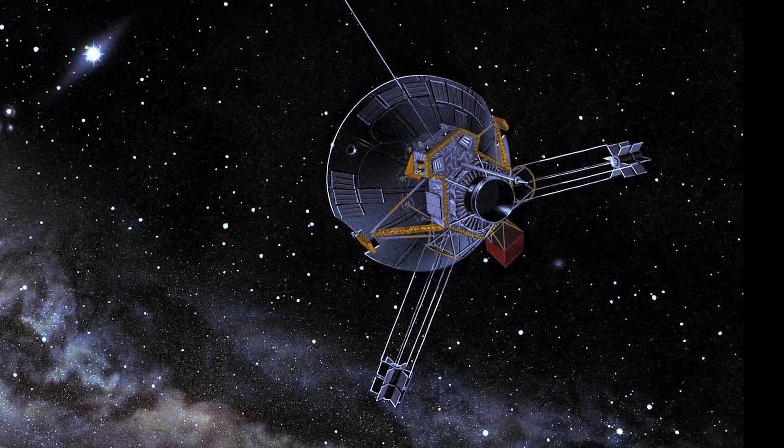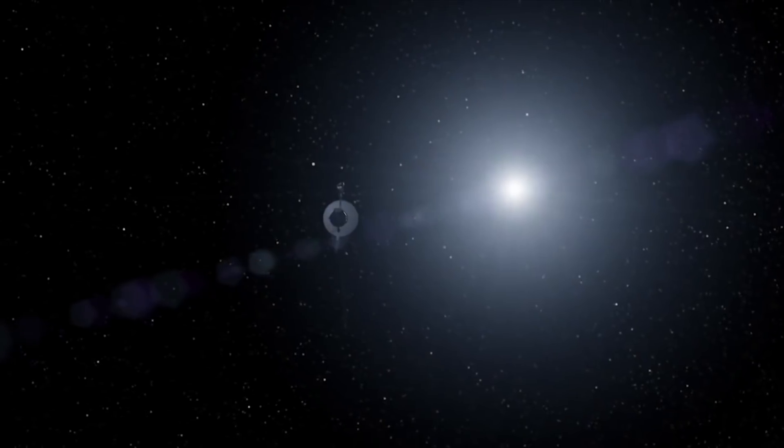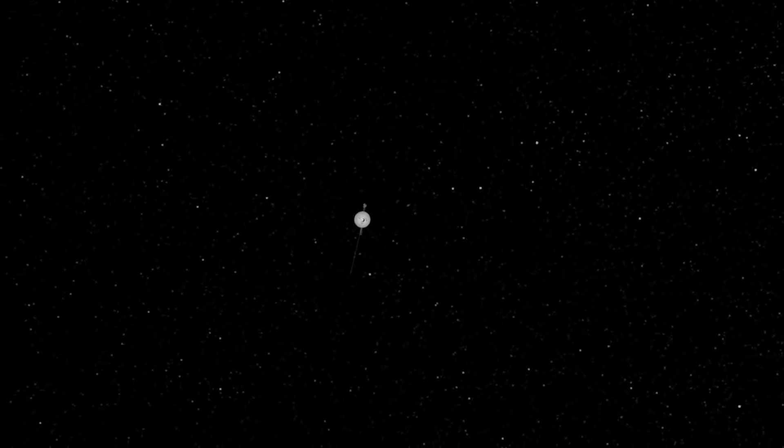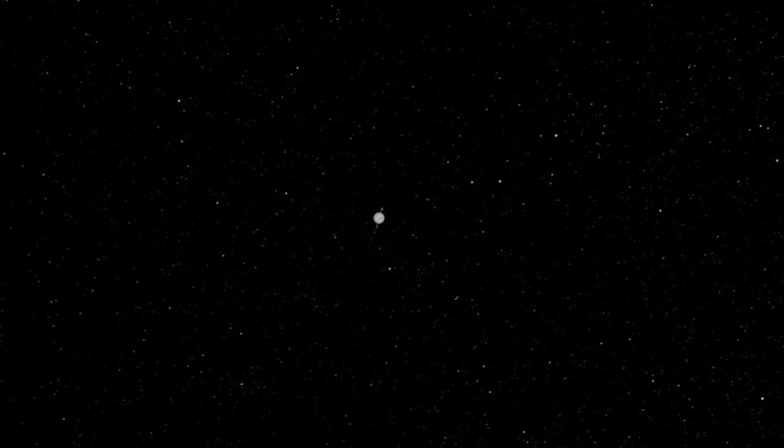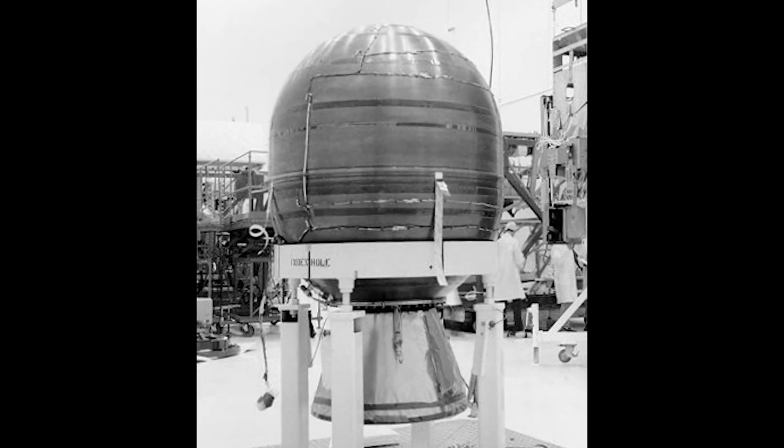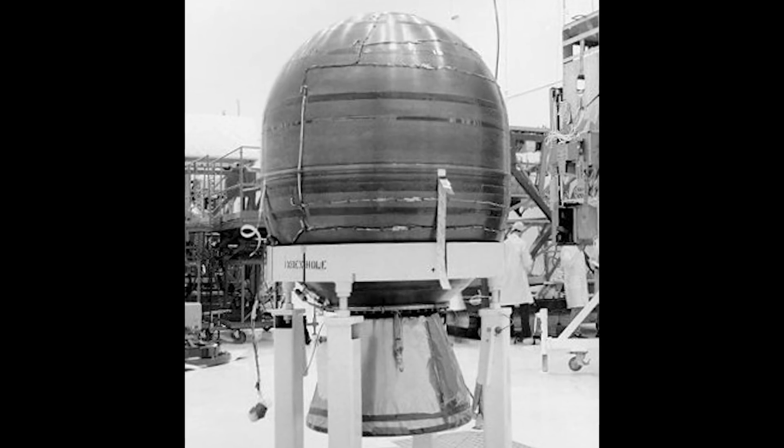The Voyager Probes, the Pioneer Probes and New Horizons. All these probes were made for flyby missions of planets within our own solar system that are destined to traverse the interstellar medium for hundreds of thousands of years. Interestingly enough, on top of the probes, the rockets that propelled them into their orbits are also destined for the interstellar medium.